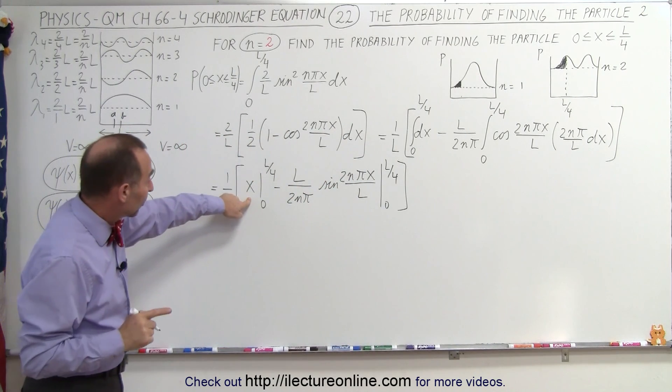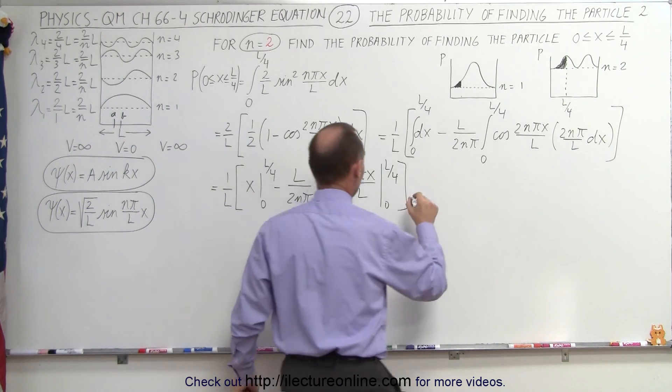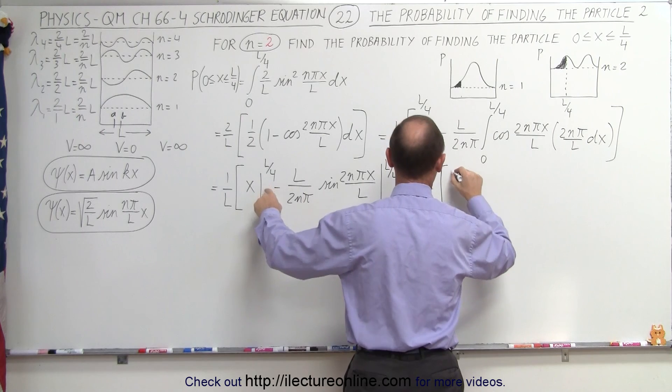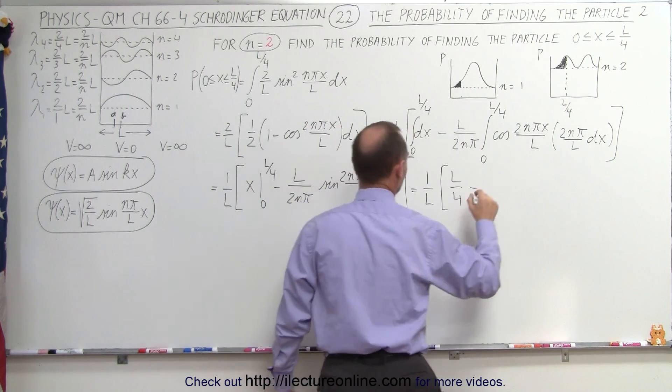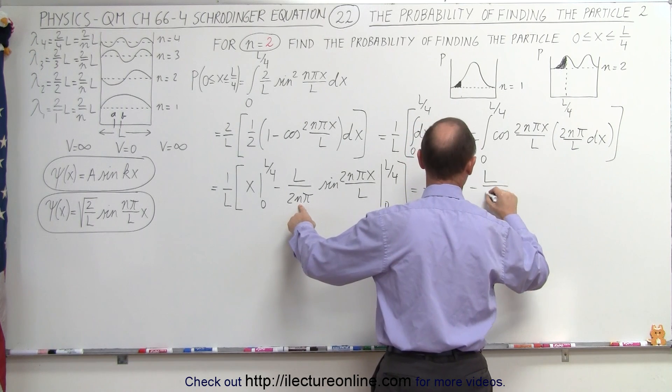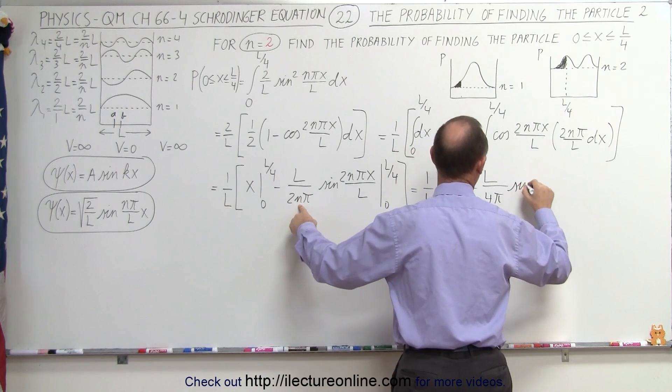When we evaluate this one right here, we plug in the lower limit, we get 0, so we only need the upper limit. So this is equal to 1 over L times L over 4 for the first integral minus, well, we have L divided by 2 times 2, which is 4 times pi, times the sine of